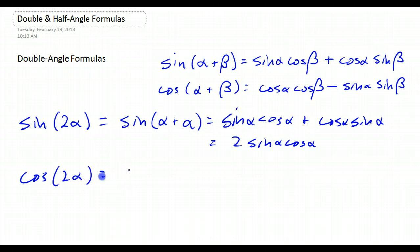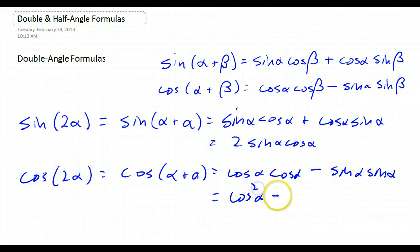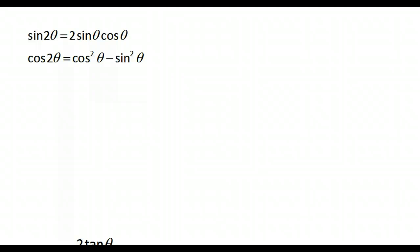Likewise, the cosine of 2 alpha is the cosine of alpha plus alpha, which works out to cosine alpha cosine alpha minus sine alpha sine alpha, which is cosine squared alpha minus sine squared alpha. And since we have a cosine squared, we can use Pythagorean identities and get more versions of that same formula.